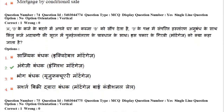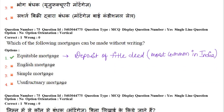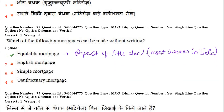The last question of this video: which of the following mortgages can be made without writing? The answer is deposit of title deed (equitable mortgage). In this type of mortgage, you simply deposit the title deed, so no writing is required. This is the most common mortgage in India. Thank you for watching.